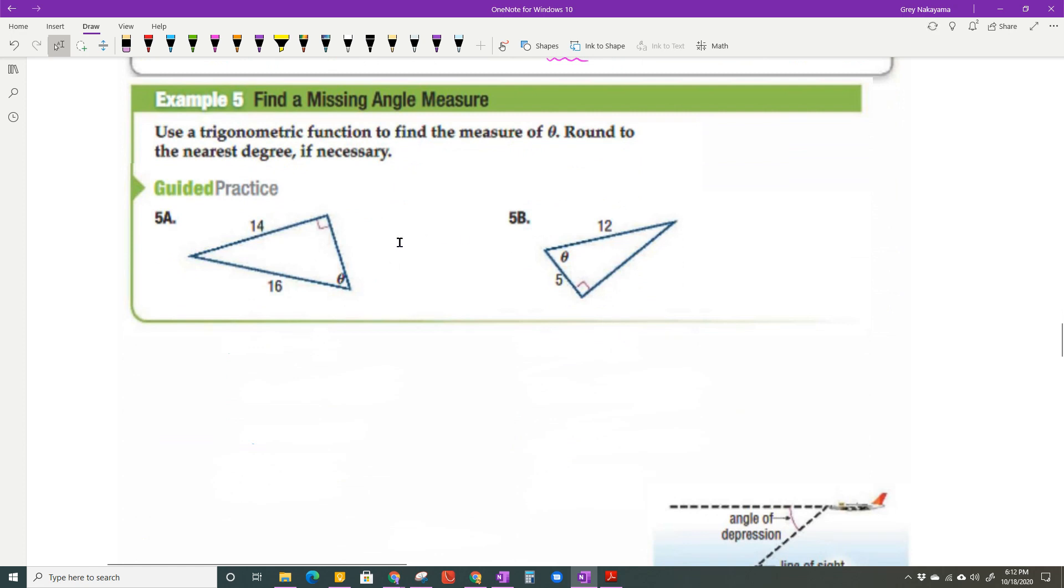In this first example to find an angle, we're going to use a trig function to find the measure of theta, round to the nearest degree if necessary. I have theta that I'm looking for, and 14 is across from theta, so that's the opposite side. 16 is across from the right angle, so it is the hypotenuse. What trig function deals with opposite and hypotenuse? That is the sine of theta.